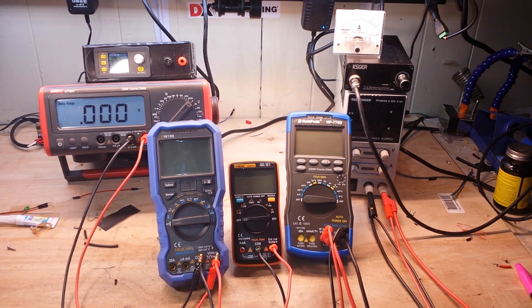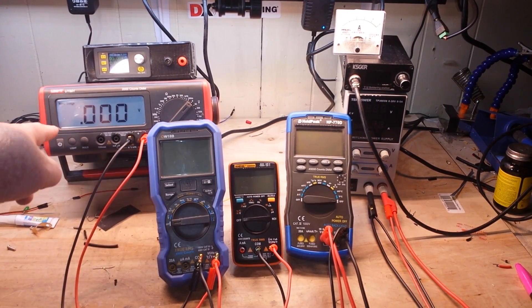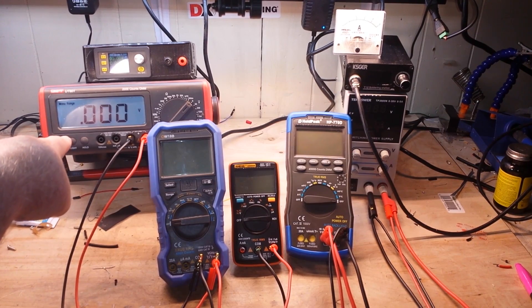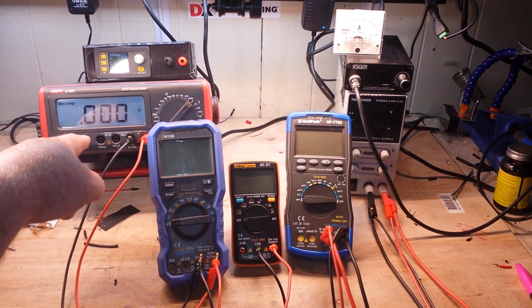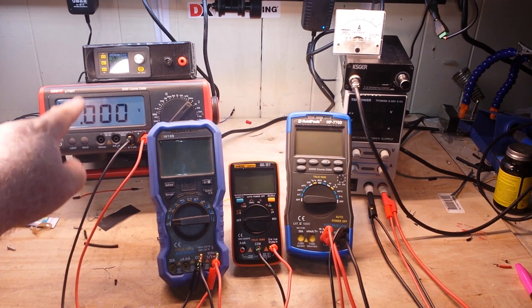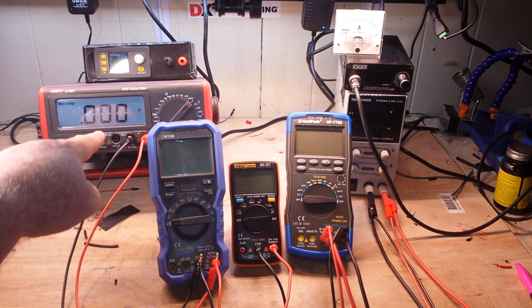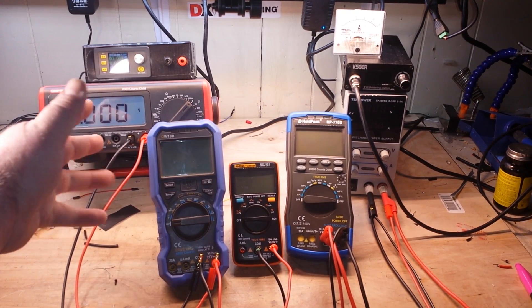So what does it mean? Well basically it is the number or the range that it can read up to before it has to switch to the next range. So for example, if this meter for instance is 2,000 counts, that means it can read up to, in this range, 2 volts or 1.999 volts before it switches to the next range.